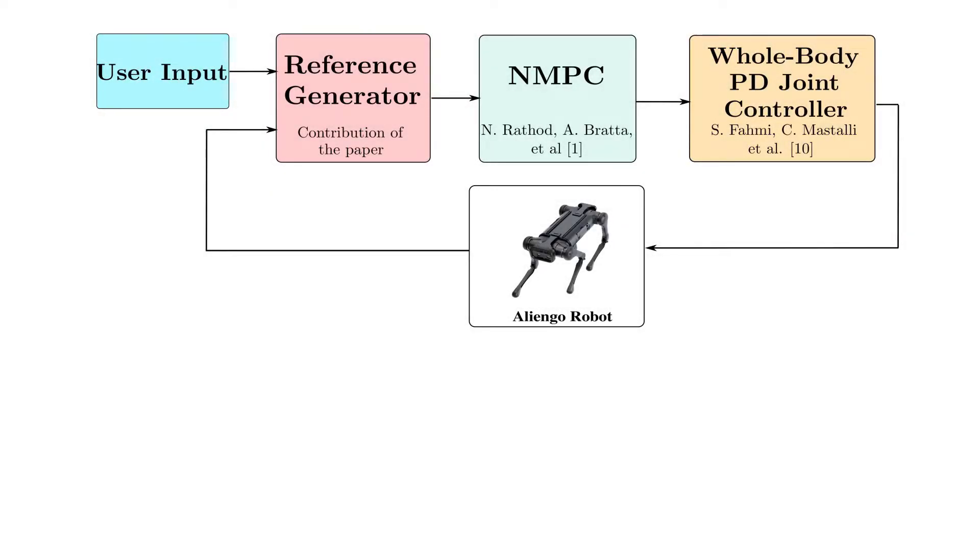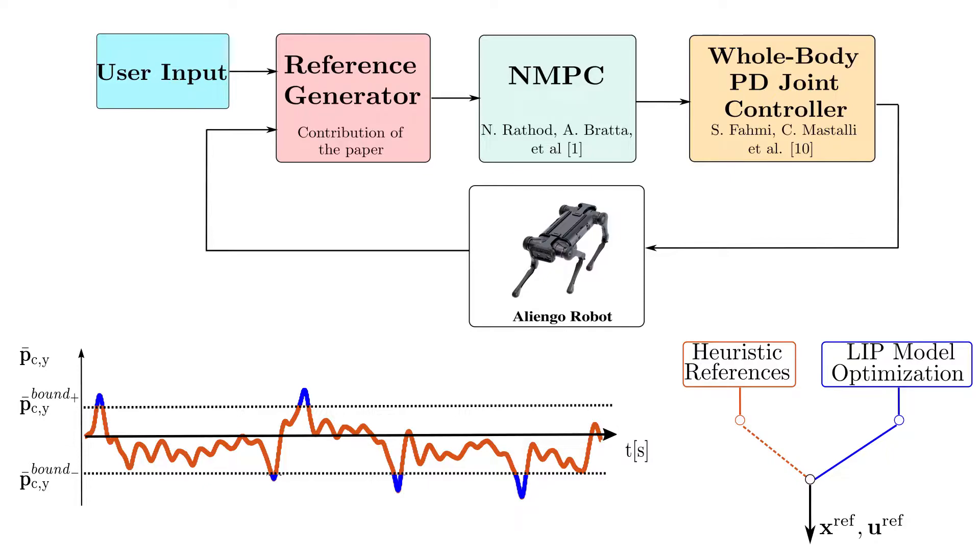The block scheme describes our entire locomotion framework: the reference generator (contribution of the paper), the NMPC, and the controller which computes desired torques for the low-level controller according to the error between goal and average COM position. The status of the reference generator is set either to heuristic or optimized. The former uses user-defined velocities; the latter computes optimal reference trajectories employing the linear inverted pendulum model.